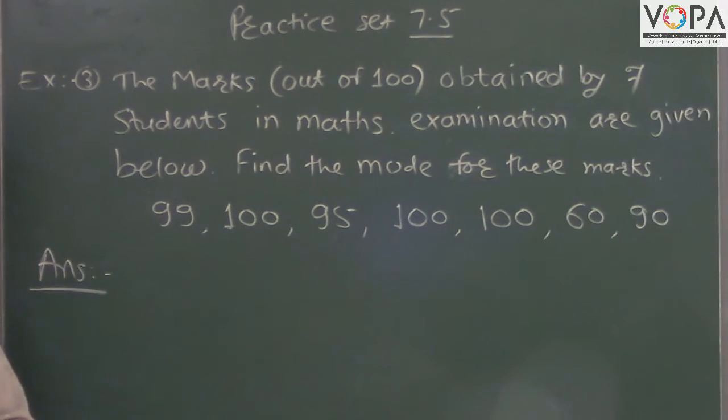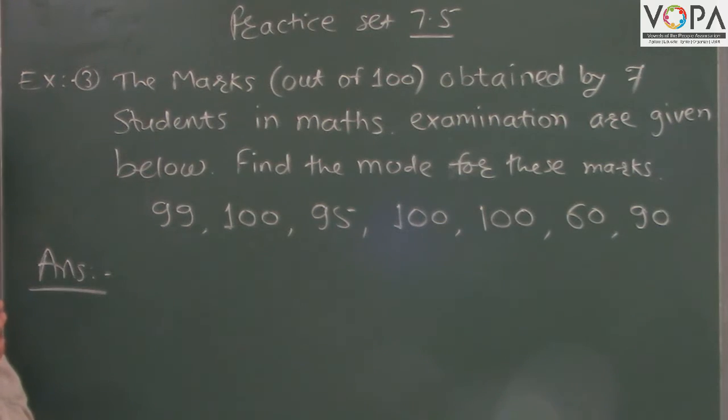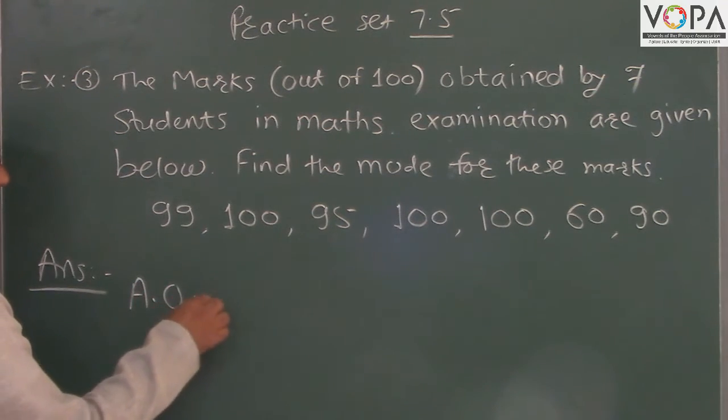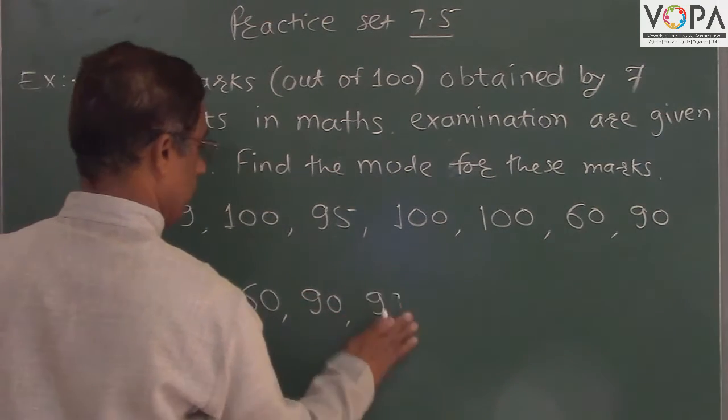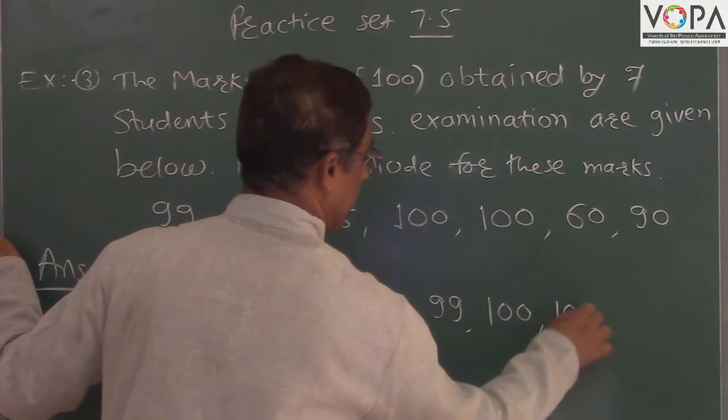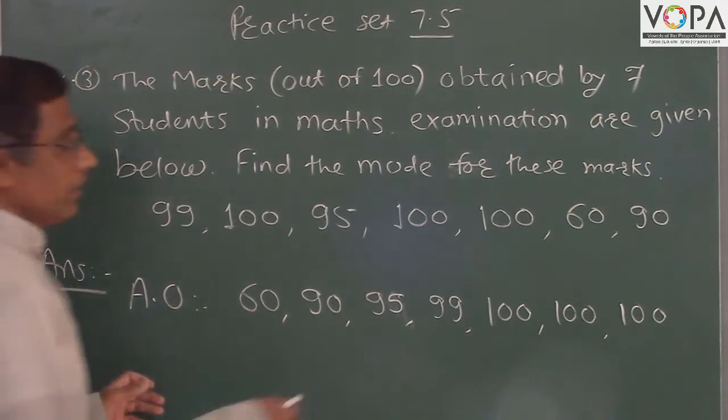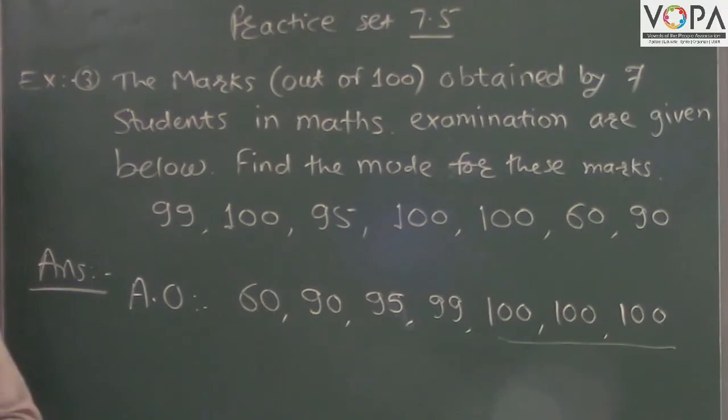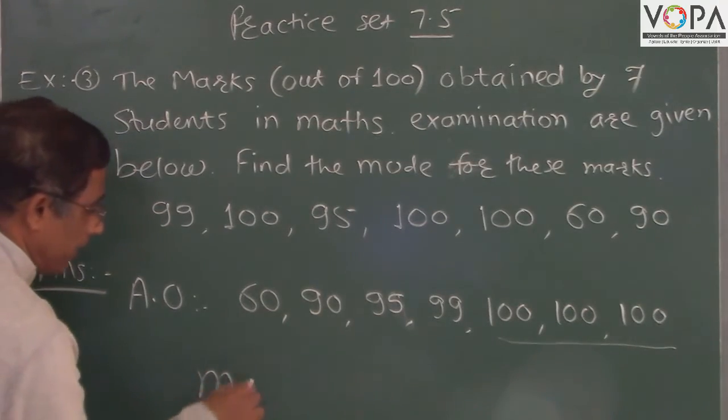To find the mode, if we write these marks in ascending order, it is easy to find the mode of these observations. So write the marks in ascending order: 60, 90, 95, 99, 100, 100, 100. In this observation, 100 score appears maximum number of times. So mode of this observation is 100.